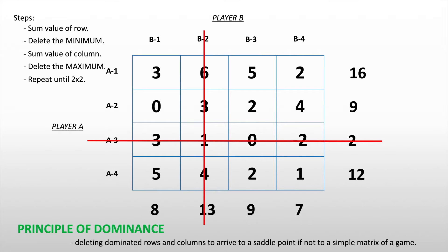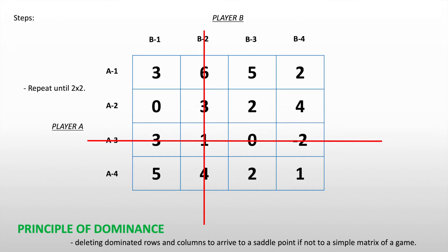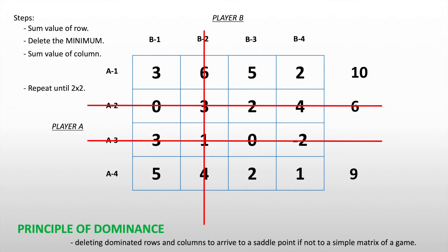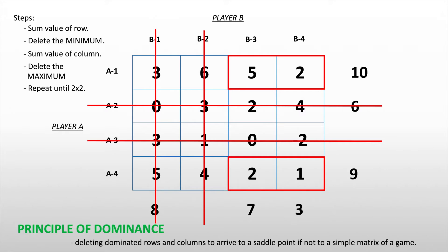We repeat until we are left with a two-by-two matrix. Summing the remaining rows (removing B2 and row A3), we get 10, six, and nine. Delete the minimum — that's six, which is player alternative number two. Then sum the remaining columns: three plus five gives eight, five plus two gives seven, and two plus one gives three. Delete the maximum, which is eight. Now we're left with a two-by-two matrix, meaning player A will only choose between A1 and A4, and player B will only choose between B3 and B4.